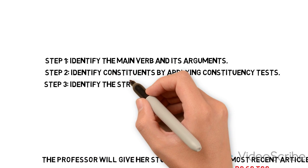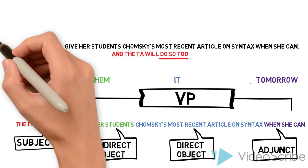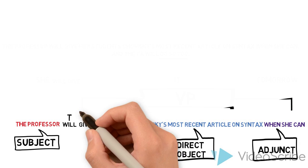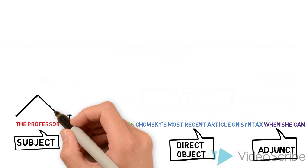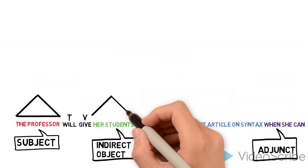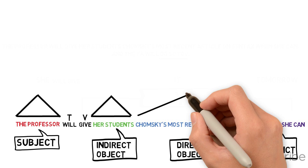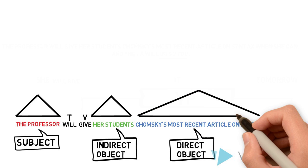The third step is to identify the structure of the major constituents. We can do this by doing a rough tree structure using triangles. So for example, we can identify our subject constituent and direct object constituent, direct object constituent, and adjunct.